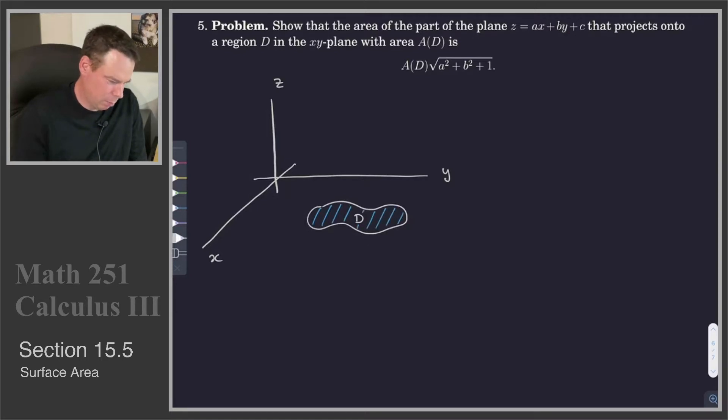And then what we have is a plane somewhere, a plane given by z equals ax plus by plus c.